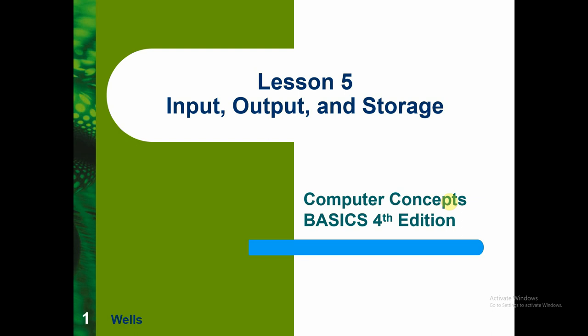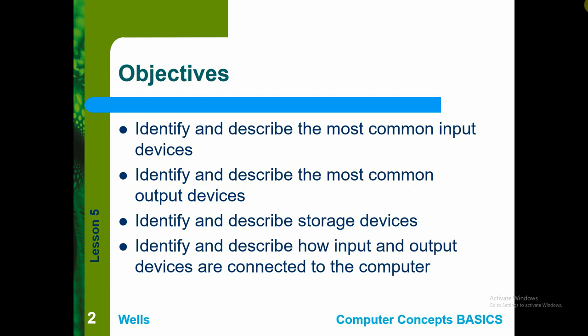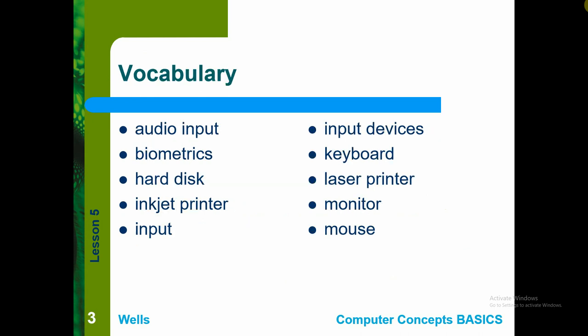Our objectives here are to identify and describe the input and output devices as well as the storage devices, and how they are connected to the computer. Some of you have already identified some input and output devices, but we need to be more specific about what each device does and how they interact with the system unit.